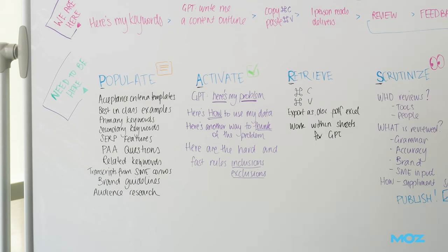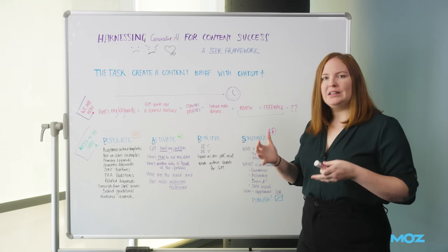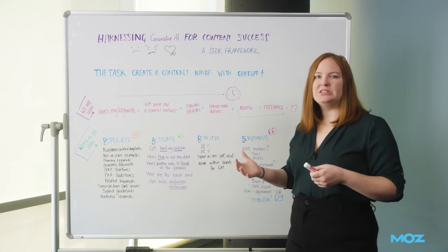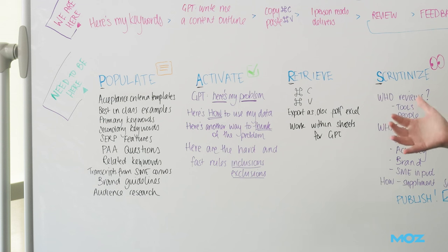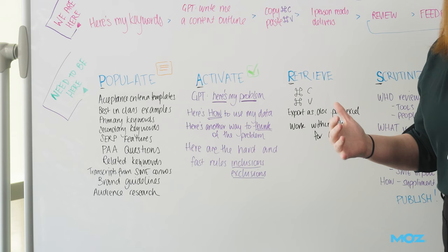The second step is to break down that problem into functional elements. The third step is to reframe that problem. So say it a different way to make sure that GPT understands the context. Lastly, you're going to outline the constraints. So what are the must-haves and what are the nice-to-haves?